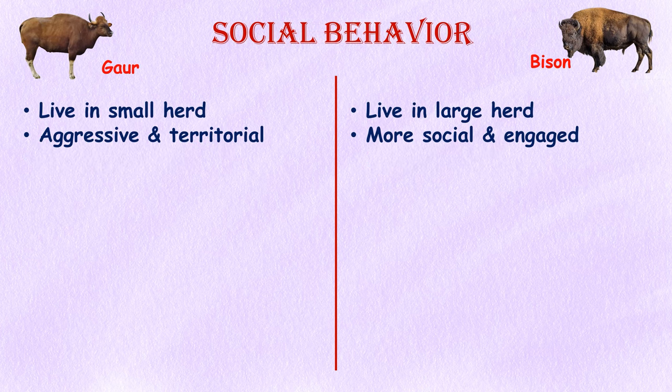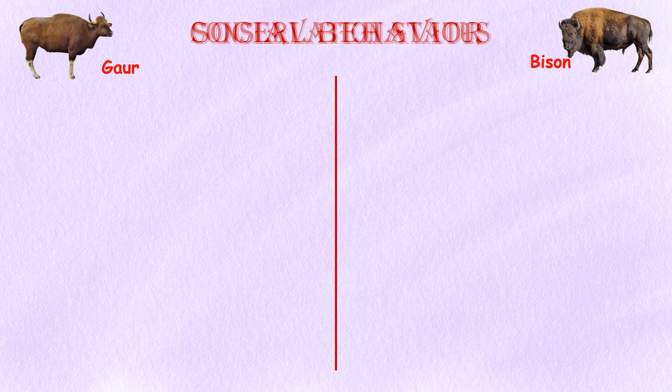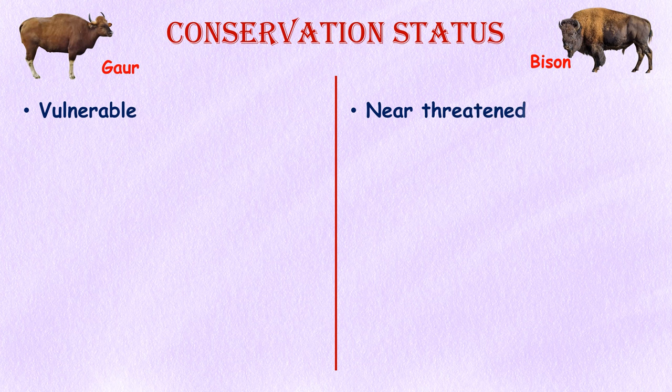Social Behavior: Gaurs live in small herds typically consisting of adult females and their offspring, while adult males tend to be solitary or form bachelor groups. They are known for their aggressive and territorial behavior. Bison typically live in large herds which can consist of hundreds or even thousands of individuals, and have a complex social structure with behaviors such as grooming, wallowing, and synchronized breeding.